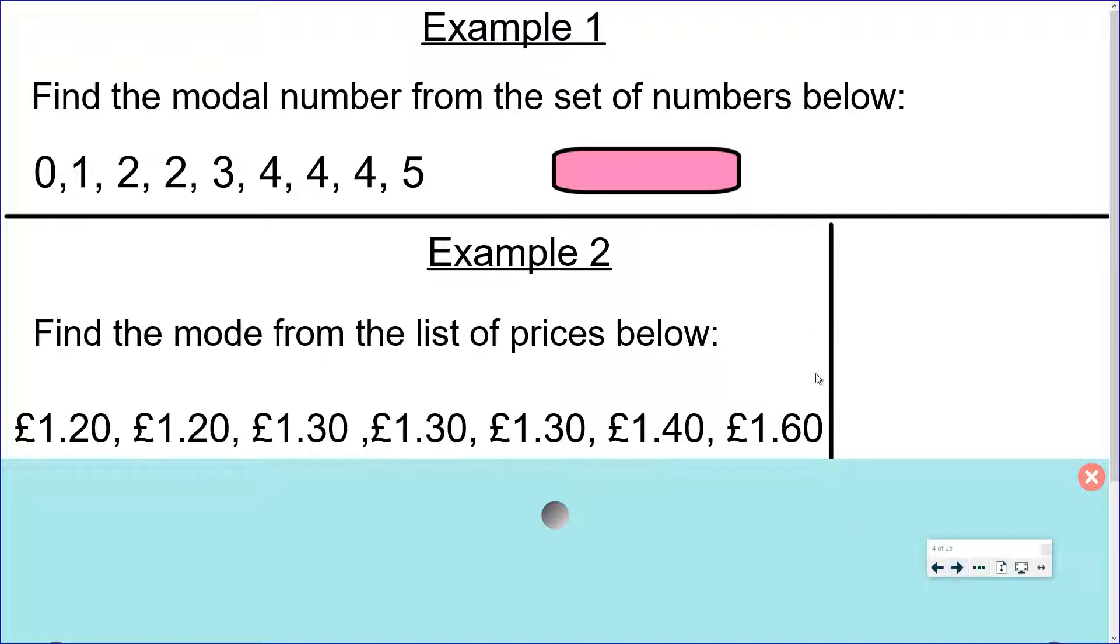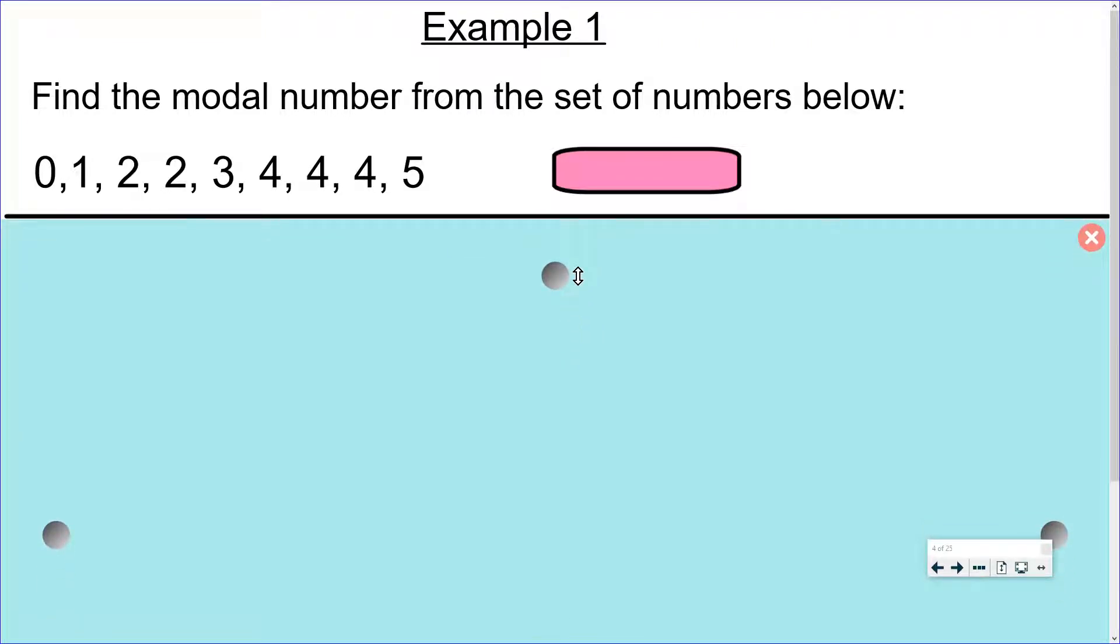Example 1. Find the modal number from the set of numbers below. So we've got our numbers here, they're all in order for us. So which number occurs the most? Well if we count each one we can see that four occurs three times which is the most, so the mode is four.